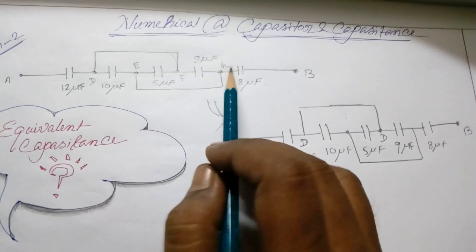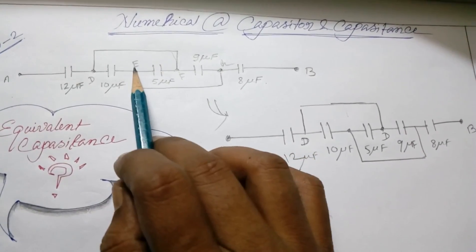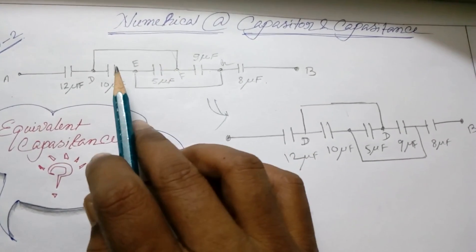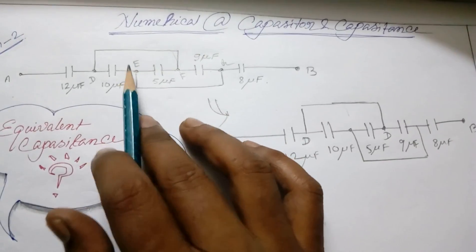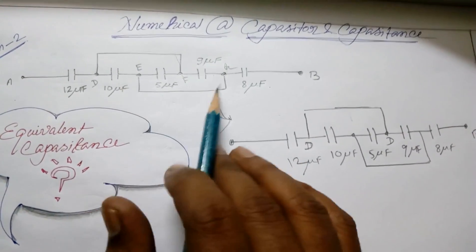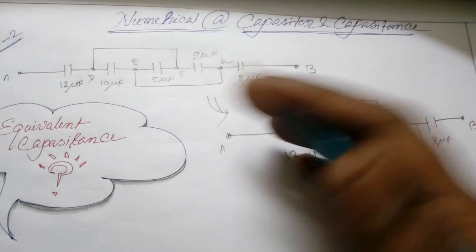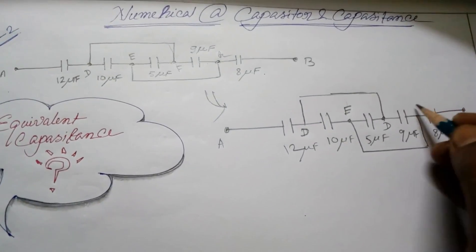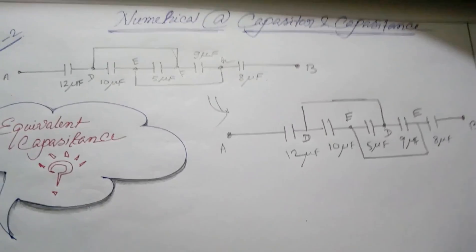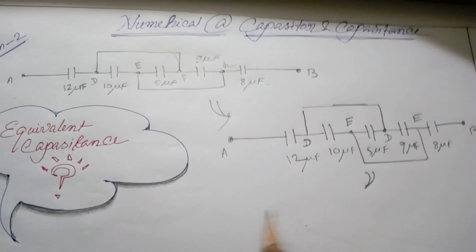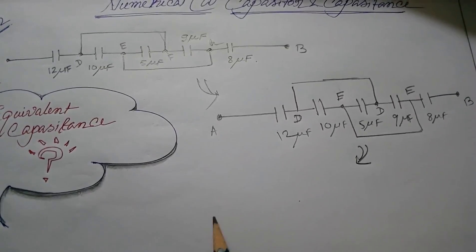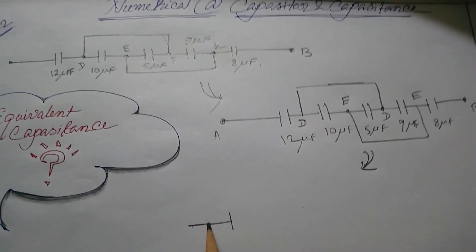Now this node is E and this node is G, and these two nodes are just the same because these two nodes are connected by a simple wire. So let's just replace G by E. So let's redraw the circuit again.